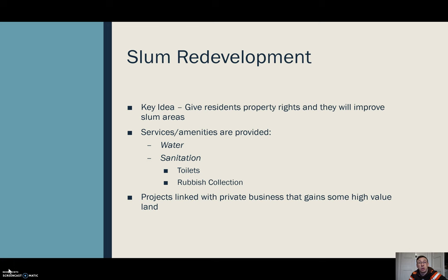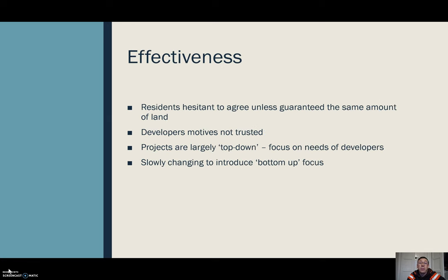The main project we talk about here is the Dharavi Redevelopment Project, abbreviated to DRP. That is linked in with private investment and private business, which is obviously looking to get something in return, because this land is very high value. In other slum areas around the world, programmes like this have resulted in huge improvements in standard of living. By giving people higher quality building materials, they improve the areas themselves. They group together to form cooperative movements — literally what the co-op is named after — and these cooperative movements bring skills from multiple people together to try and improve everybody's lot.